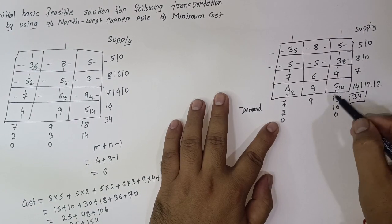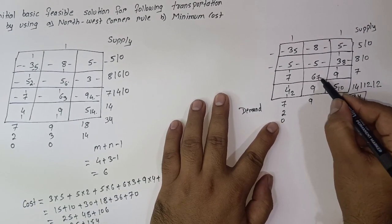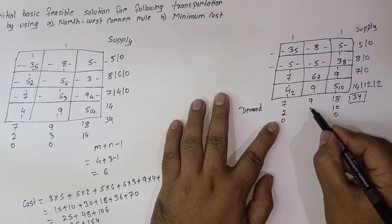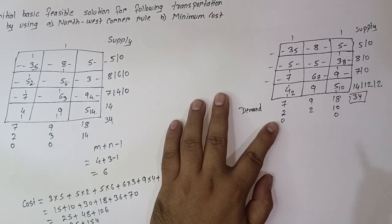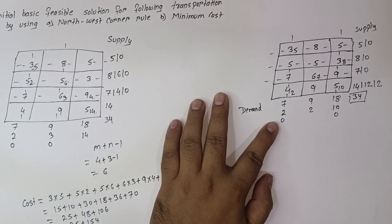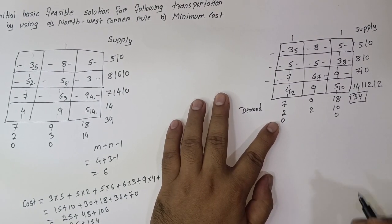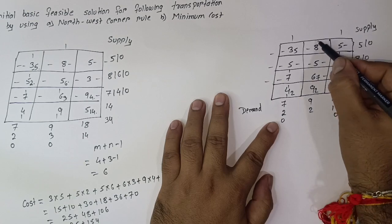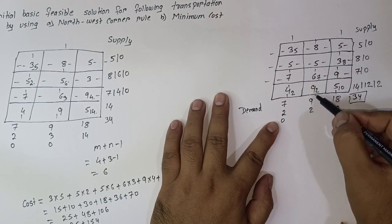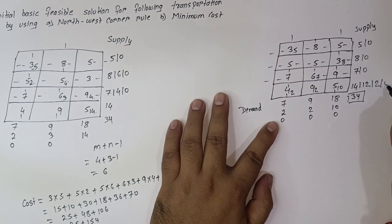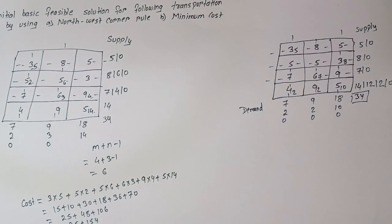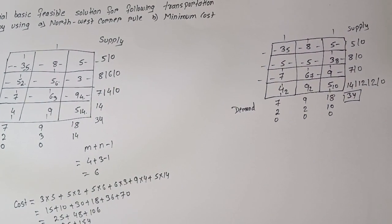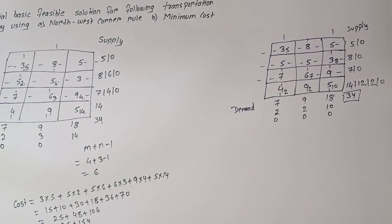The next minimum value is 6. The minimum of supply and demand is 7, so 7 is allocated here and this row is cancelled. Now only one remaining available cell with value 9 is left, so 2 is allocated there. Demand becomes 0 and supply becomes 0. All allocations are complete using the Least Cost or Minimum Cost Method.